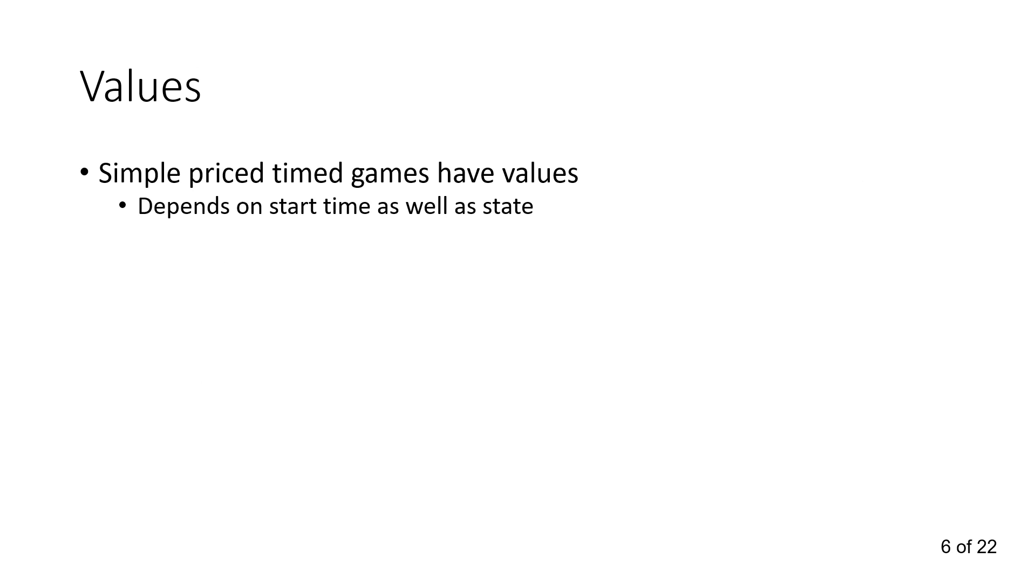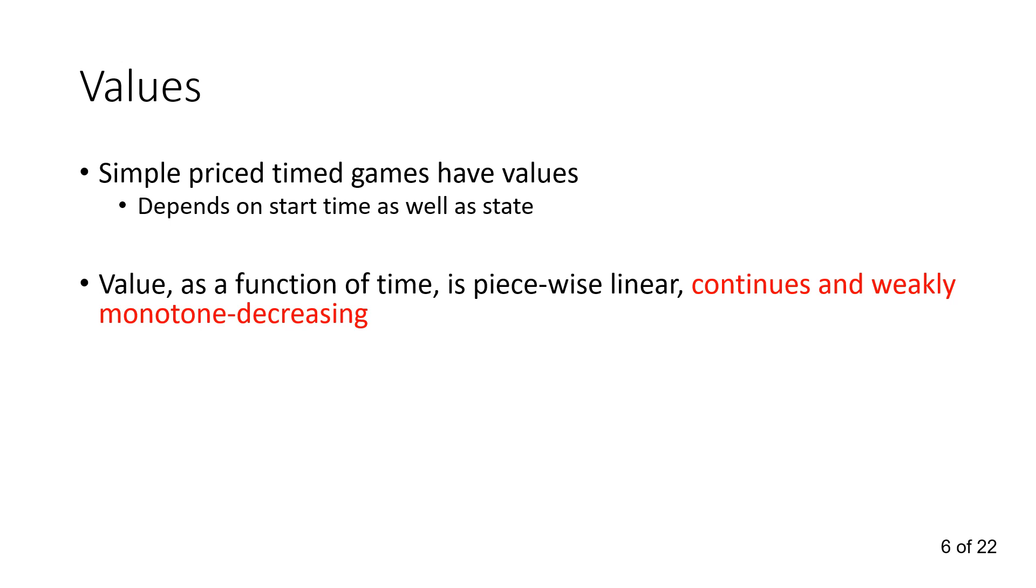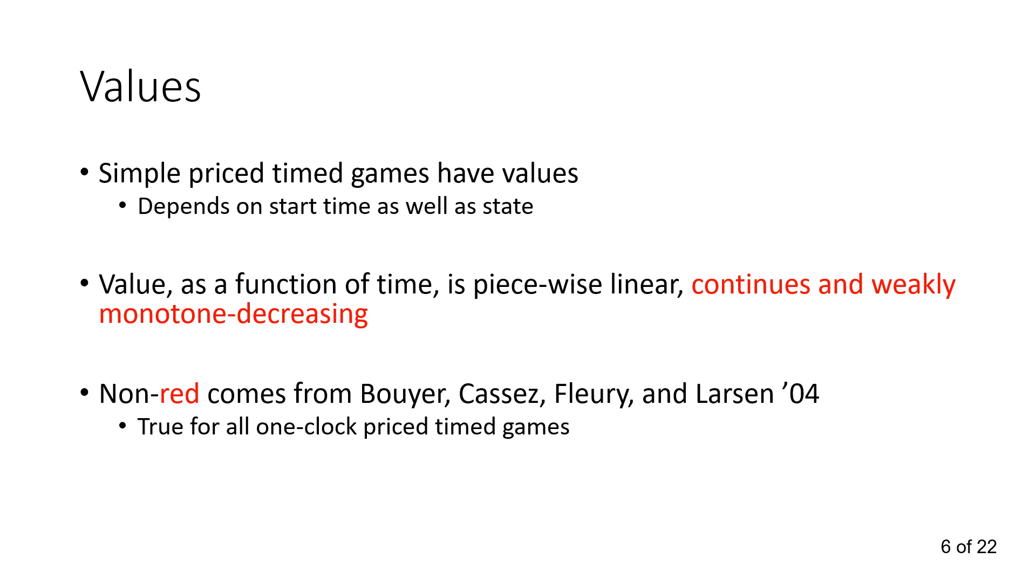Simple priced timed games, similar to priced games, have a value, but here depends on the starting time as well as the starting state. When viewing the value as a function of time, it becomes piecewise linear, continuous, and weakly monotone decreasing. We will see some examples of this. The non-red part came from Boyer, Cassez, Fleury, and Larsen from 2004, and it's true for all one-clock priced timed games, and the red part came from my previous paper, and it's not true except for simple priced timed games.